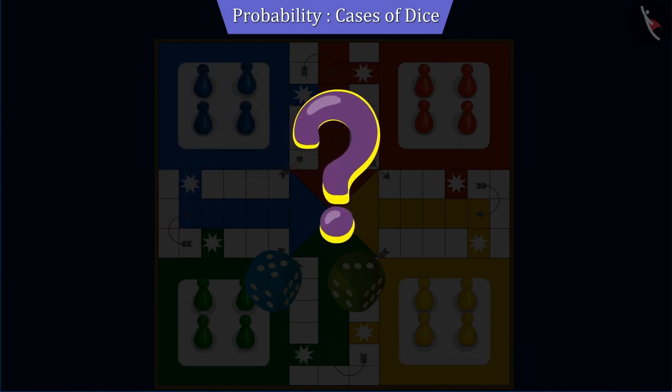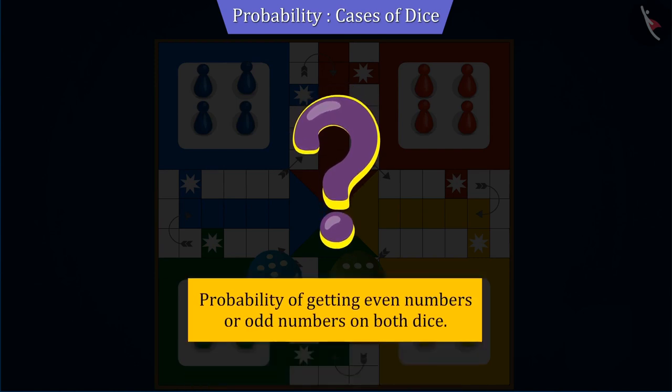Can you tell the probability of getting an even or an odd number on both dice to move the token forward?